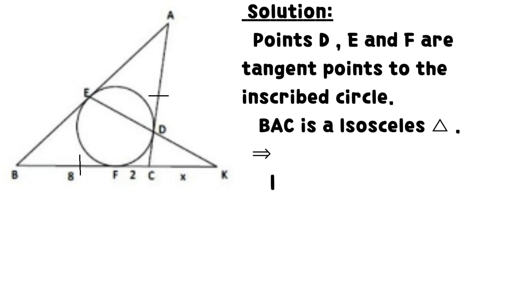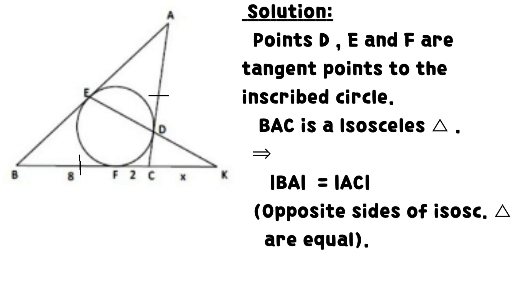BAC is an isosceles triangle. It implies that BA equals AC. It is because the opposite sides of an isosceles triangle are equal.